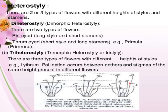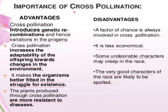Importance of cross pollination — advantages and disadvantages: Cross pollination introduces genetic recombination and hence variation in progeny. A disadvantage is that the factor of chance is always involved. Cross pollination increases the adaptability of offspring towards changes in environment.